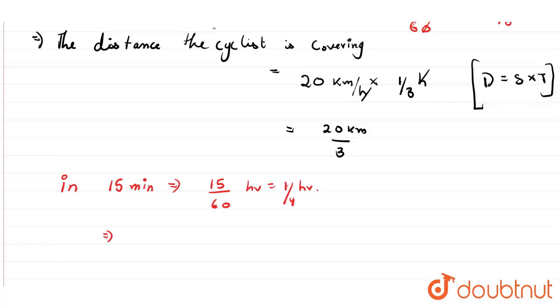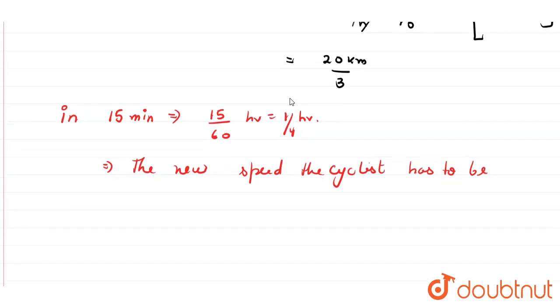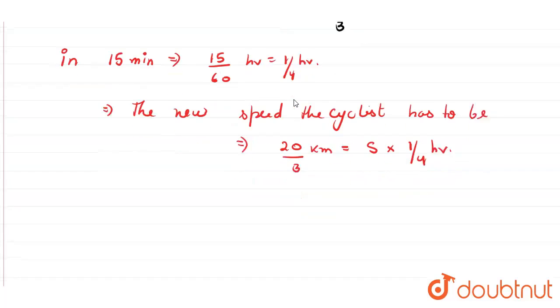So the new speed the cyclist has to travel - the new speed would be, we know the distance is 20/3 kilometers. Distance equals speed times time, so time is 1/4 hour, so from here